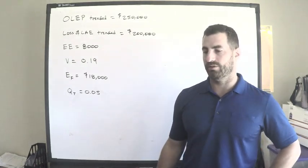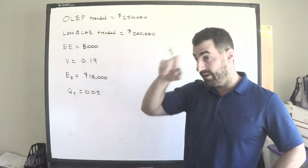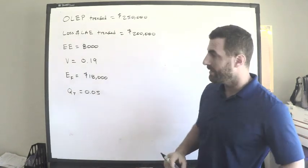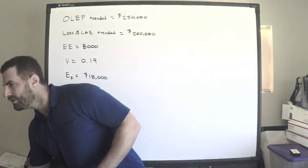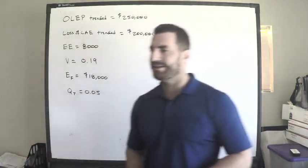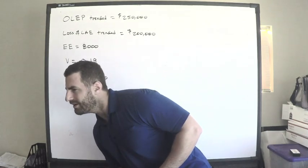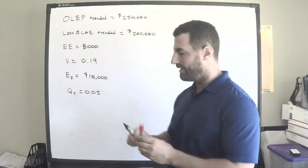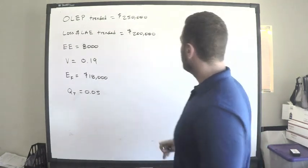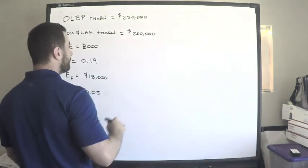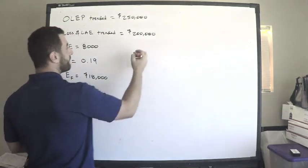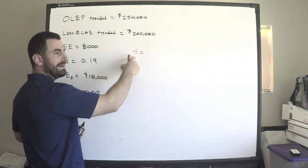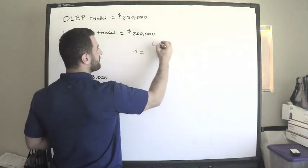I'll link the previous videos up here to the right. Part A says to calculate the indicated average rate level change using the loss ratio method. I gave you a previous video for that, I'll link it in the right hand corner. What we need to do is compute the following. If i is the average indicated rate level change, this is equal to our losses plus LAE divided by the premium at current rate level.